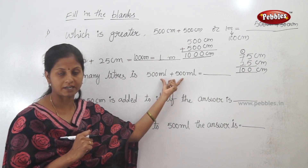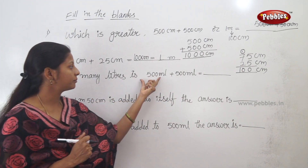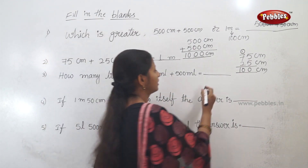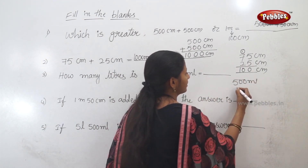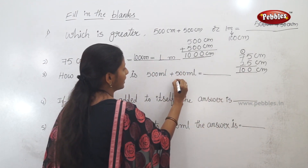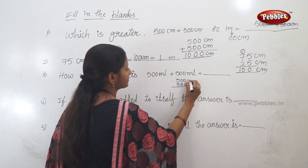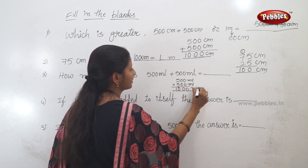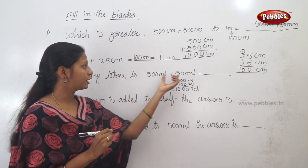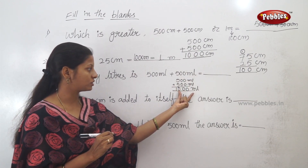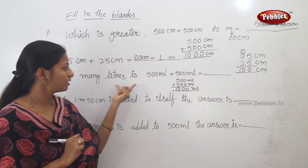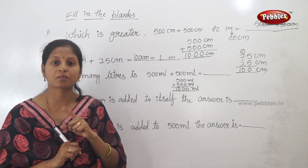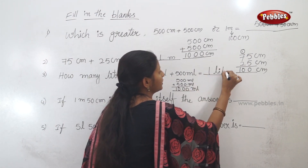500 ml plus 500 ml. Let's solve this. 500 ml plus 500 ml — that is how many liters? 500 plus 500: 5 plus 5 is 10, so that gives 1000 ml. When we add 1000 ml, how many liters are there? 1 liter is equal to 1000 ml. So 1000 ml equals 1 liter. The answer is 1 liter.